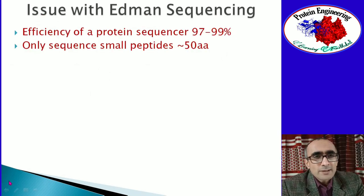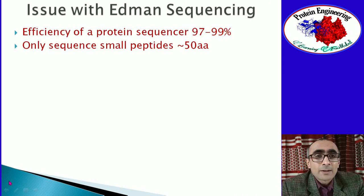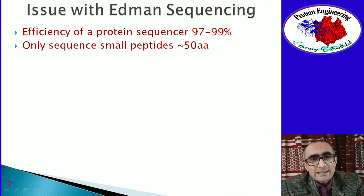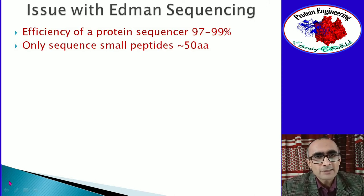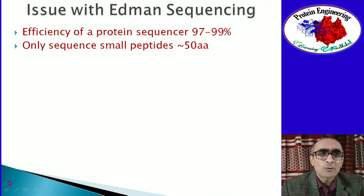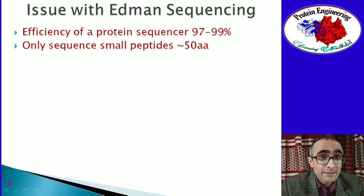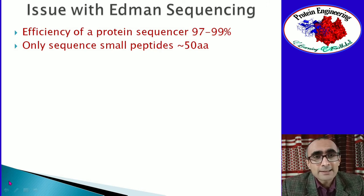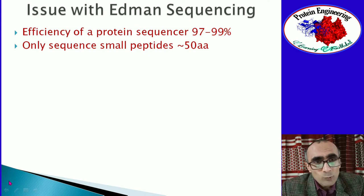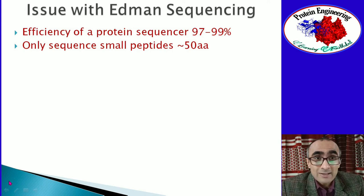You can sequence peptides that are 20 to 30 amino acids long using Edman degradation. Because when you increase the length of the peptide beyond 20–30 amino acids, the background becomes so evident that the peaks are not very distinct. Identification of amino acids becomes really difficult as you increase the peptide length, because of the poor efficiency of this sequencing method.